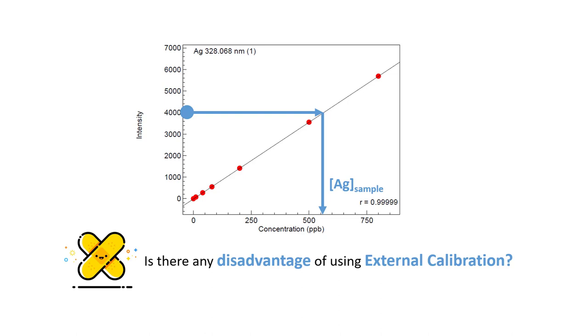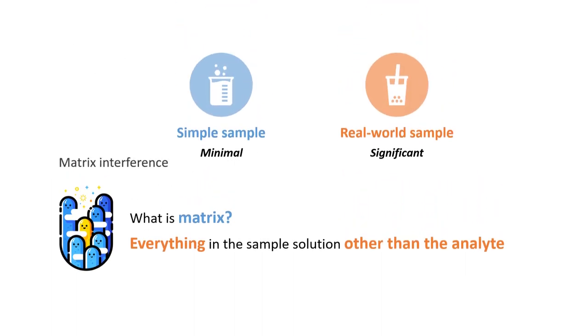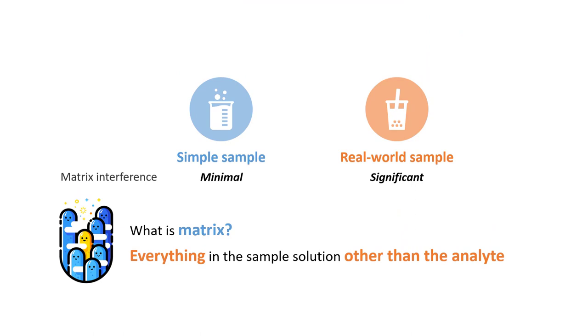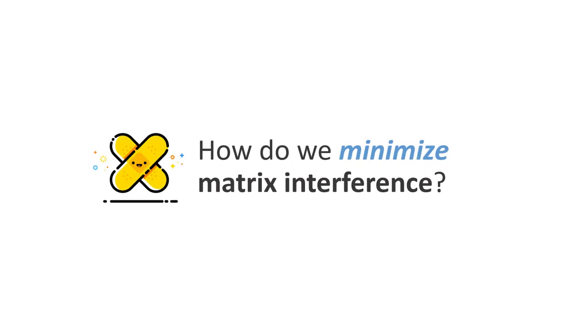Let me ask you these questions: How do we know if the unknown concentration obtained from the calibration curve is accurate? Is there any disadvantage of using external calibration? The major disadvantage of using external calibration is the presence of matrix interference. So what is matrix? Matrix is everything in the sample solution other than the analyte. If you're dealing with simple samples, for example the standard solutions we prepare in the lab, the matrix interference is usually quite minimal. However, if you're dealing with real-world samples, the matrix interference may be quite significant because the matrix itself can be very complex. Because the matrix may interact with the analyte to increase or decrease the instrumental response, the quantitative analysis may not be accurate.